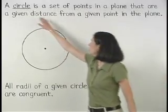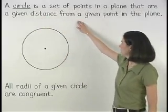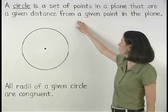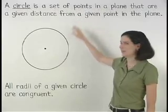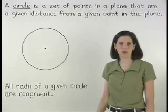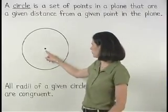A circle is a set of points in a plane that are a given distance from a given point in the plane. The given point is called the center of the circle.